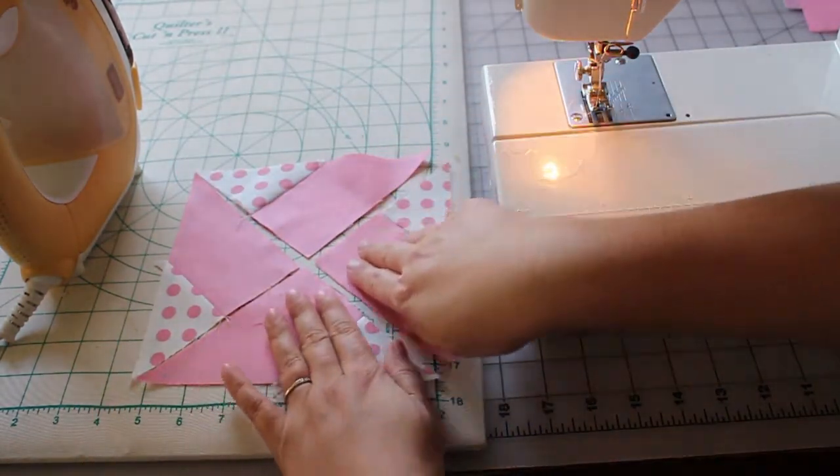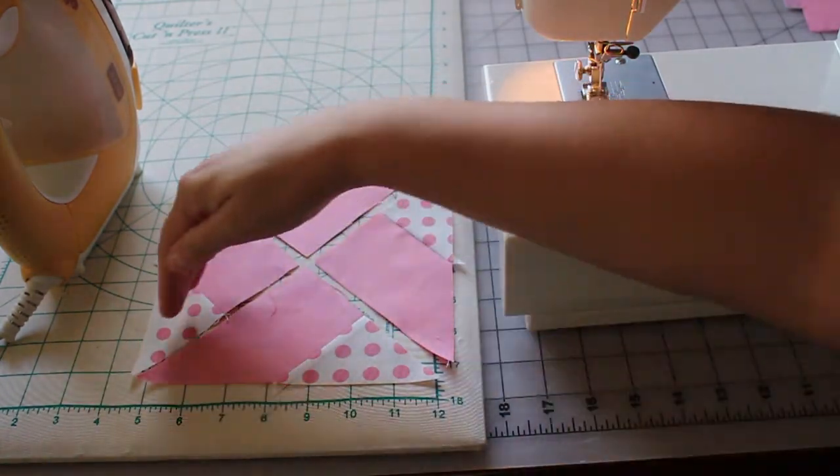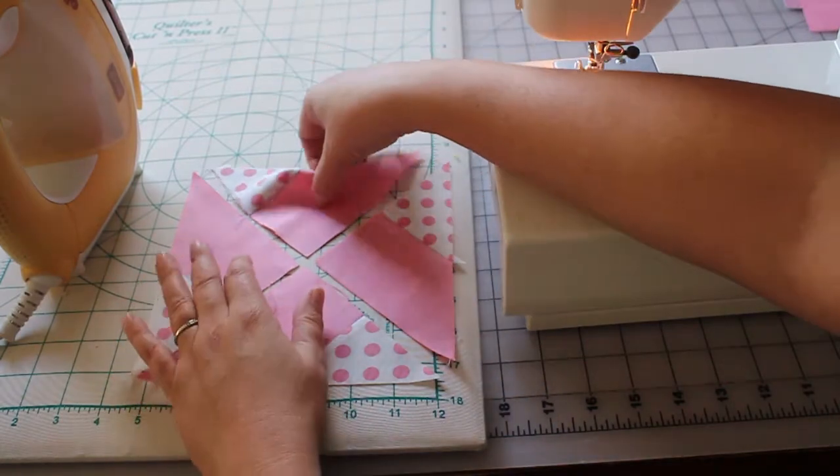Now we're going to stitch these two together to make one half and these two together to make another half. Think of it like rows. This is our first row and this is our second row. It's like a four patch but with triangles.